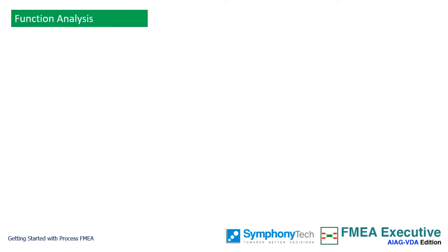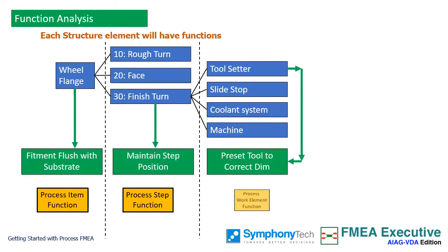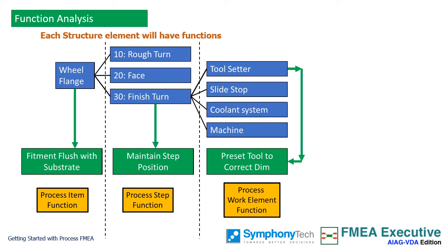The next step in FMEA is to assign functions to each structure. Functions assigned to the process item will be product functions. A wheel flange should fit flush with the substrate for the product function to perform properly. Functions assigned to process steps and to process work elements will be process functions. The finish turn process maintains the step position on the part being machined, and the tool setter presets the tool to the correct dimension. Functions describe what useful work each structure should be doing.